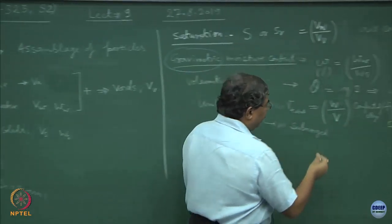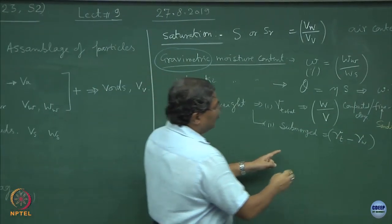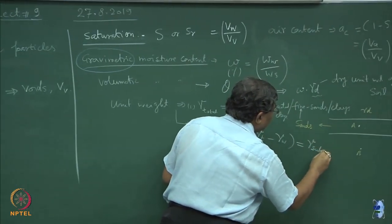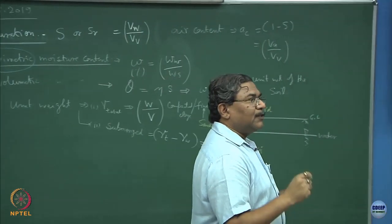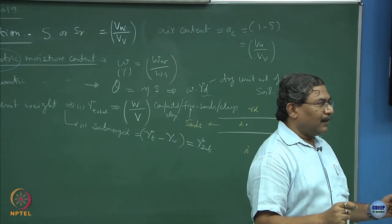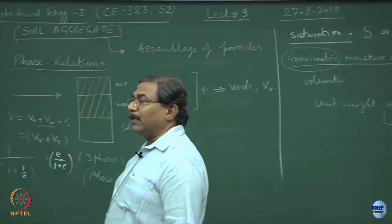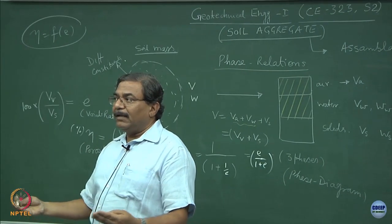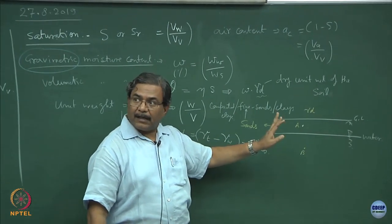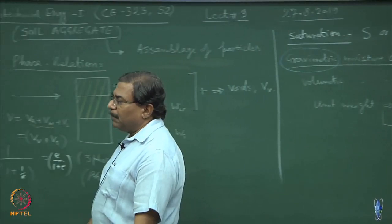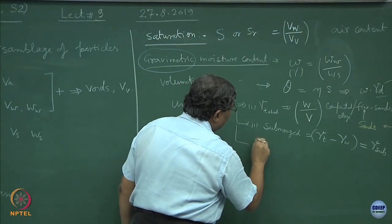A point B below the water table is most of the time in submerged state. Submerged unit weight is nothing but total unit weight minus gamma W. This type of unit weight is depicted as gamma submerged. Please be very careful with the wording of the situation — the material is such that it wants to understand what the circumstances are.